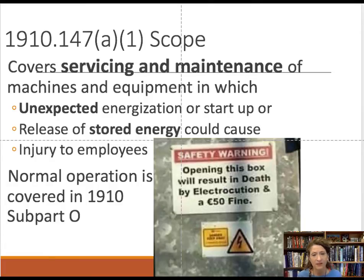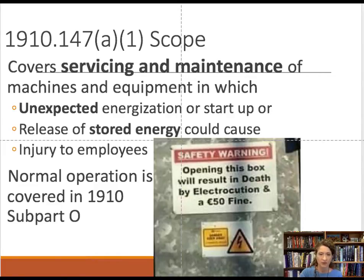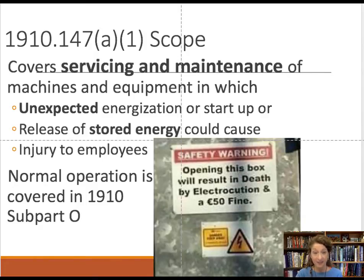The scope of lockout-tagout differs from machine guarding. Machine guarding applies when the machine is running during normal operations. Lockout-tagout covers the servicing of equipment — when maintenance is going on and equipment must be completely shut down. It prevents the unexpected re-energization of machinery and the release of any stored energy. Here's an example of a safety warning: opening this box will result in death by electrocution — and that is sarcasm.